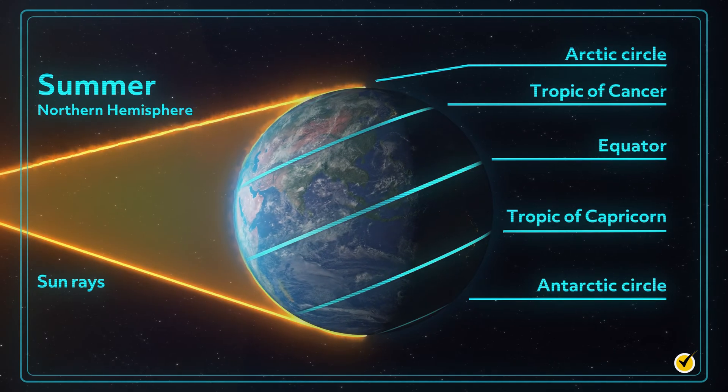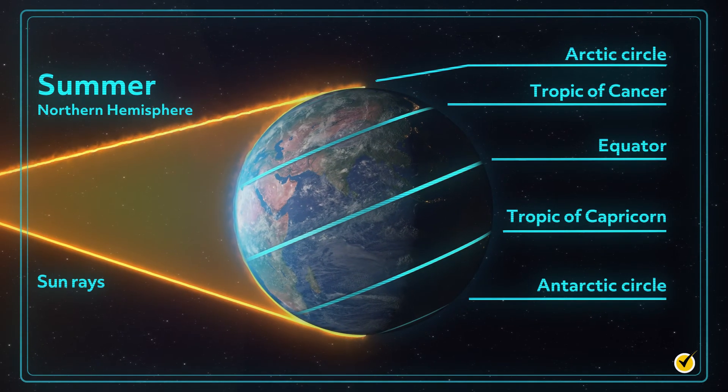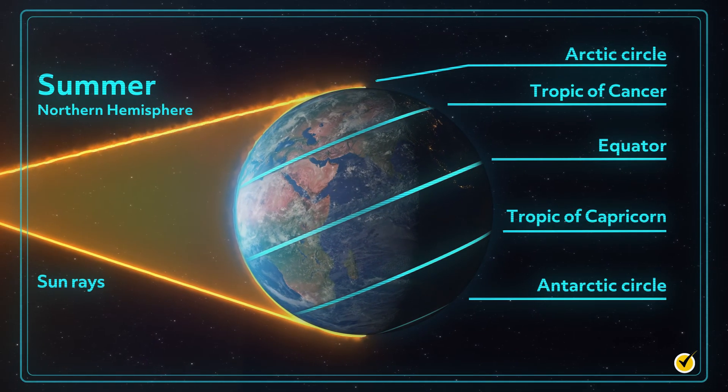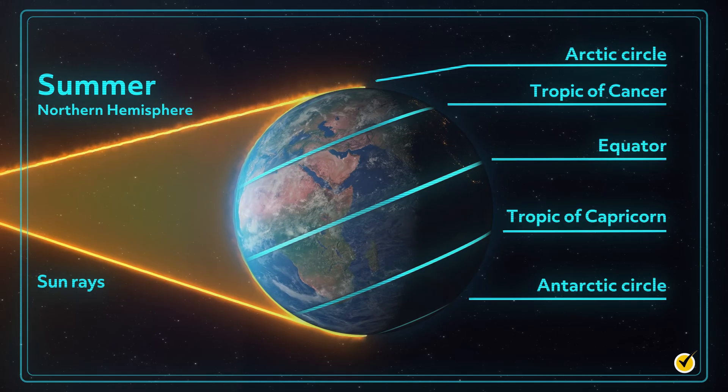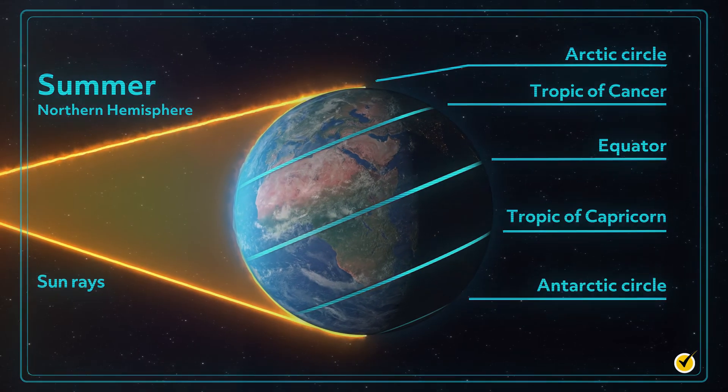The solstices represent the Earth at its closest or farthest from the Sun in its orbit. During the Northern Hemisphere's summer solstice, the Southern Hemisphere is experiencing its winter solstice.